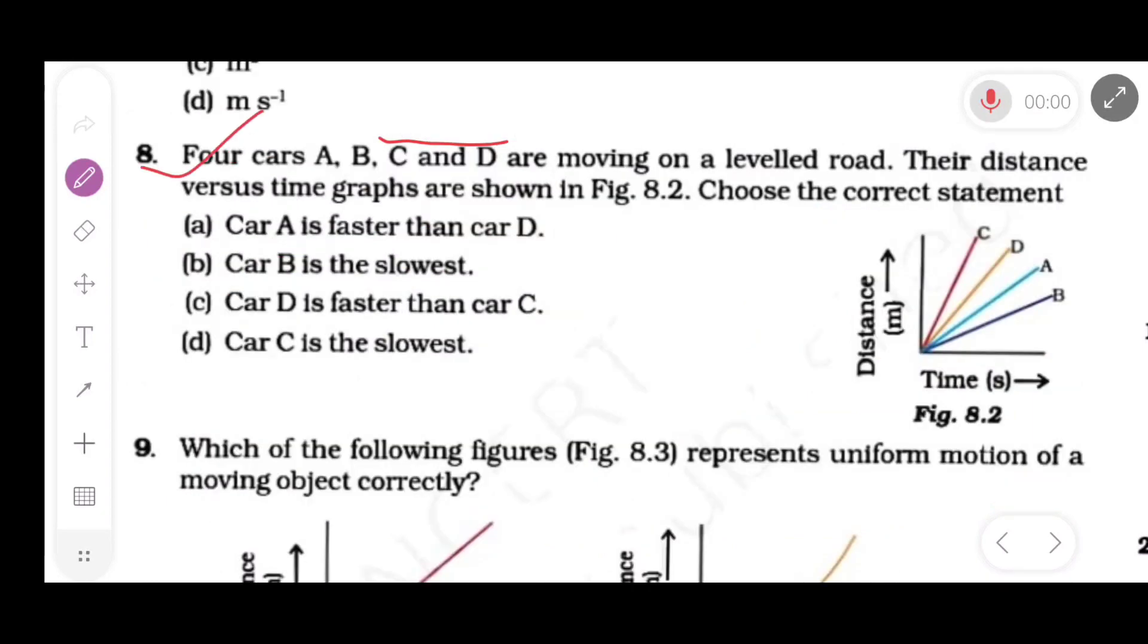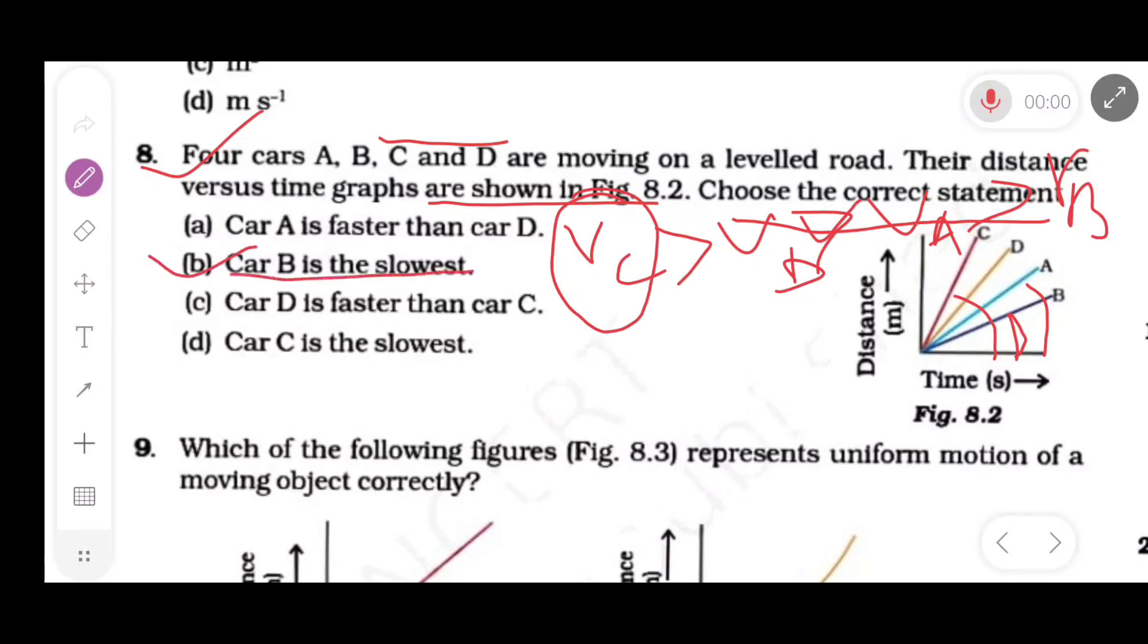Now next: Four cars A, B, C, D are moving on a level road. Their distance versus time graph shown in figure. Choose the correct statement. Here angle made by the graph B is less than the angle made by A, the angle made by A less than the angle made by D, and angle made by D less than the angle made by C. So greater the angle, greater the slope, and greater the slope means greater the speed. So obviously Vc > Vd > Va > Vb. So C has maximum velocity and B has least velocity. Option B: Car B is the slowest.